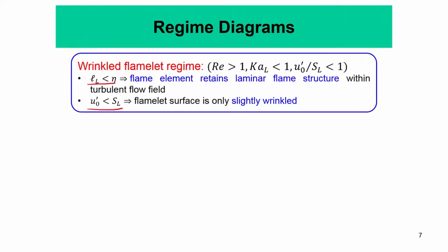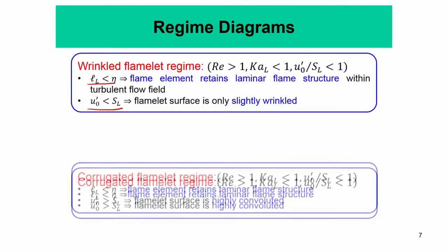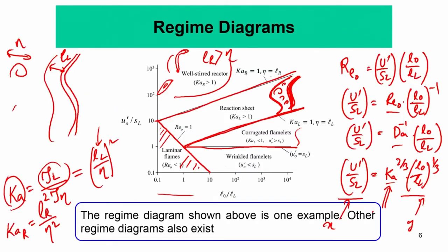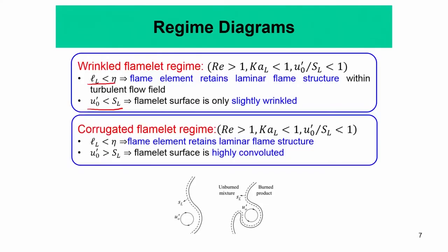Since U prime by SL is less than 1, the flame surface is only slightly wrinkled. In the corrugated flame regime, you have Reynolds number greater than 1 and the flame Karlovitz number still less than 1, but U prime by SL is greater than 1.